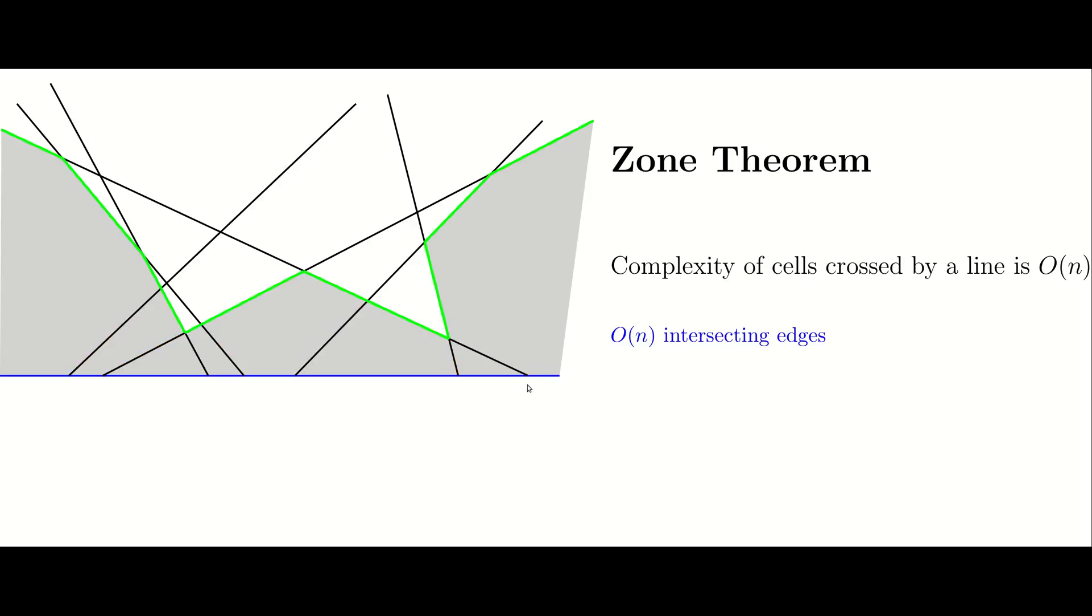So the main part of the proof is actually to show that these green lines or the green edges are also bounded by a linear function. To prove that the number of green edges is linear, we use the following argument.